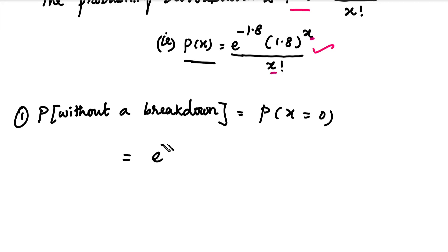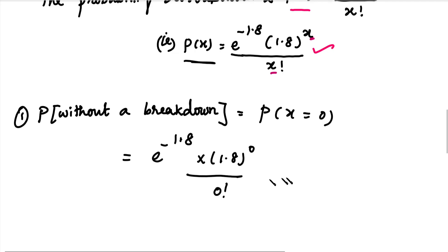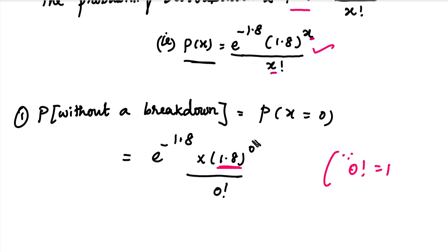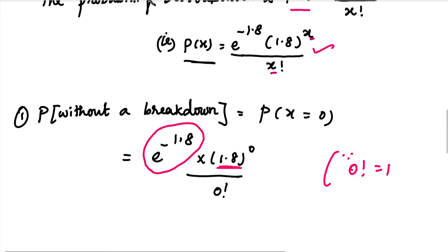P(X=0): in the numerator there is the value 1.8 to the power 0. This value is 1, because anything to the power 0 is 1. The remaining term is e to the power minus 1.8. Using a calculator, we get the value 0.1653.